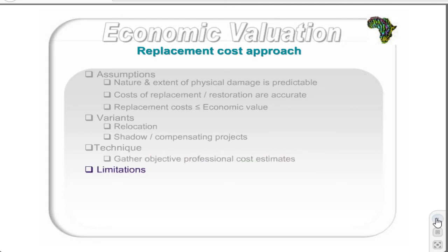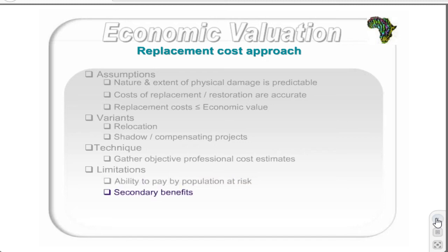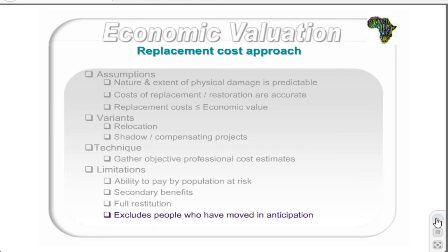Several limitations of the replacement cost method exist. First, the ability of the population at risk to pay the replacement costs places a downward bias on the results. Second, the method assumes there are no secondary benefits associated with the replacement, so values may be exaggerated as the full amount cannot be attributed to the environmental good or service. Third, it assumes full restitution can be made after damage and the loss is fully compensated. However, the original state of the environment cannot be completely restored and unknown long-term effects may occur, meaning the method may underestimate the true value. Lastly, individuals who may have moved in anticipation of environmental damage are excluded, so replacement costs will be insufficient for these parties as their threshold is higher.